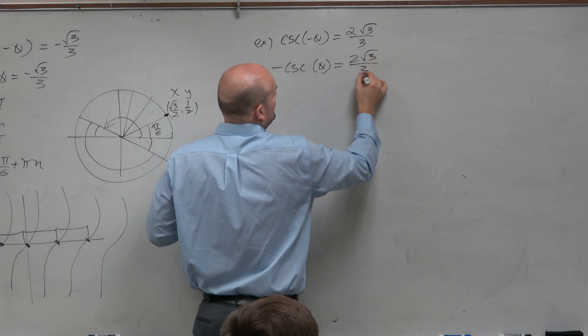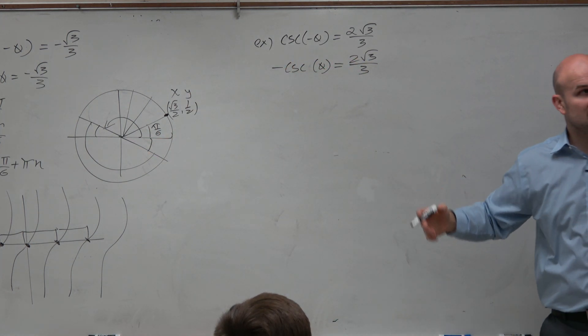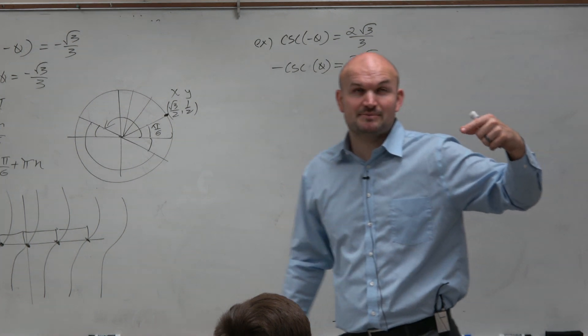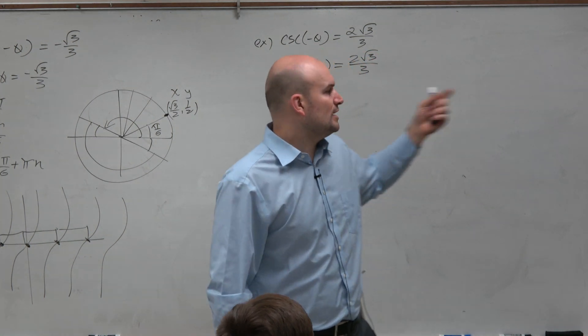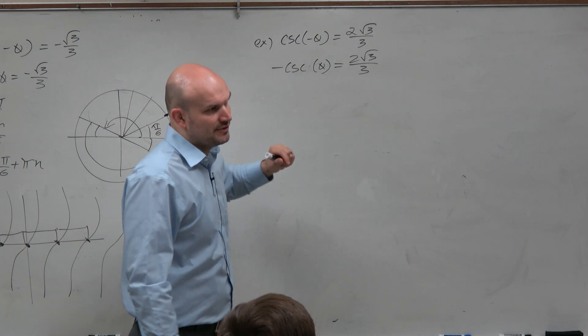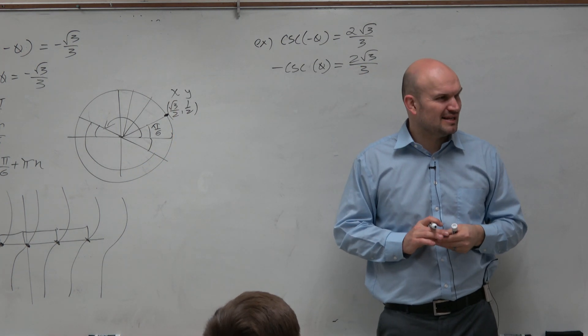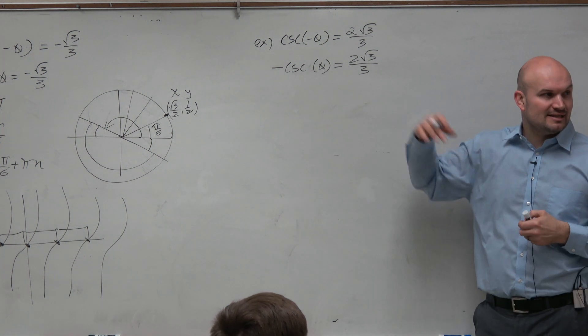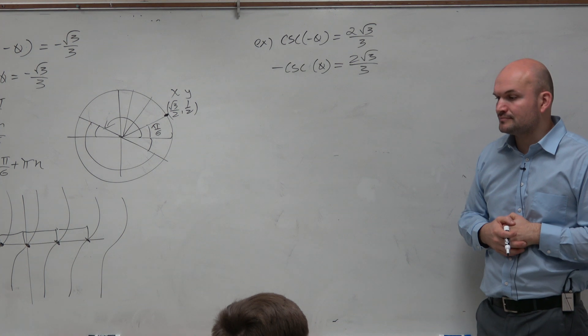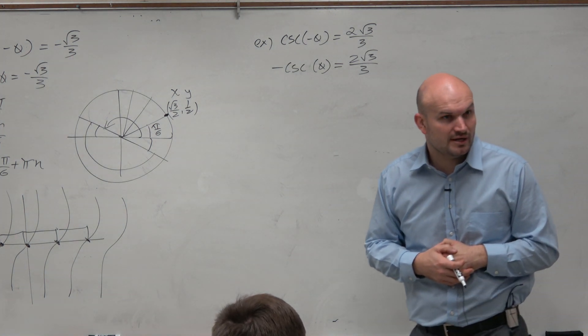So there we have this. Now again, thinking of our unit circle idea, when is cosecant, which is, if you guys remember last chapter, cosecant is going to be 1 over y. So when is 1 over y equal to 2 square root 3 over 3? And that's kind of a little too much to think about, right? I would at least think so. So why don't we rewrite this in terms of sine? Because aren't cosecant and sine reciprocals of one another?